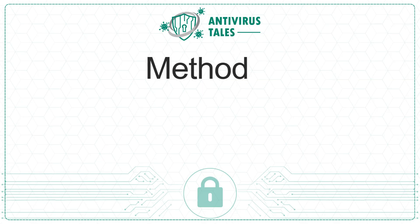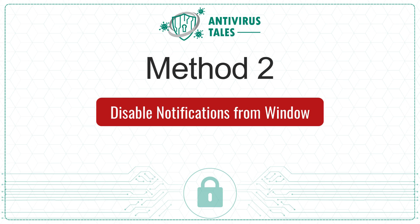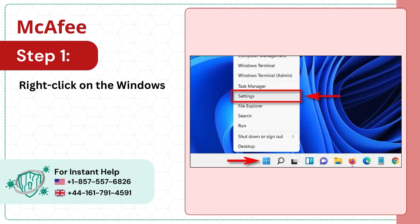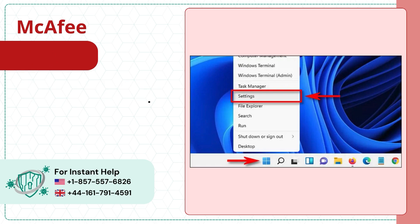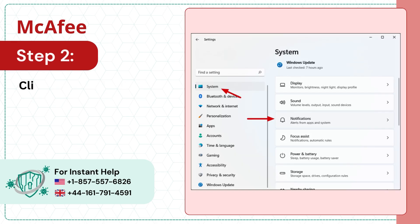Method 2: Disable notifications from Windows. Step 1: Right-click on the Windows icon and select Settings. Step 2: Click on System and select Notifications.